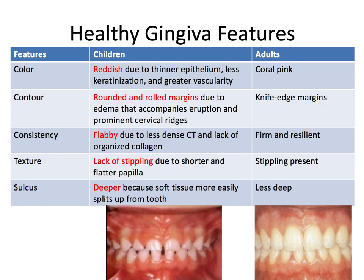In terms of contour, in children, the gingiva has rolled and rounded margins due to edema, or fluid collection, that accompanies eruption and also those prominent cervical ridges of the primary teeth. In adults, the margins tend to be knife-edge, so they're thinner, sharper, and cleaner.